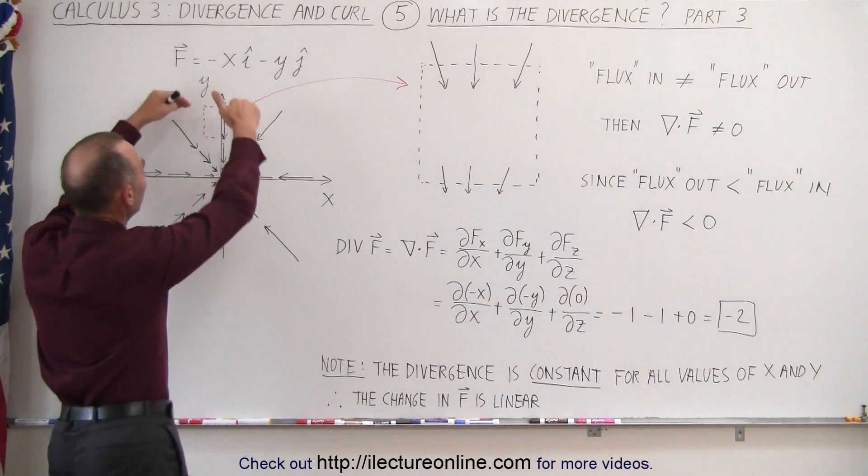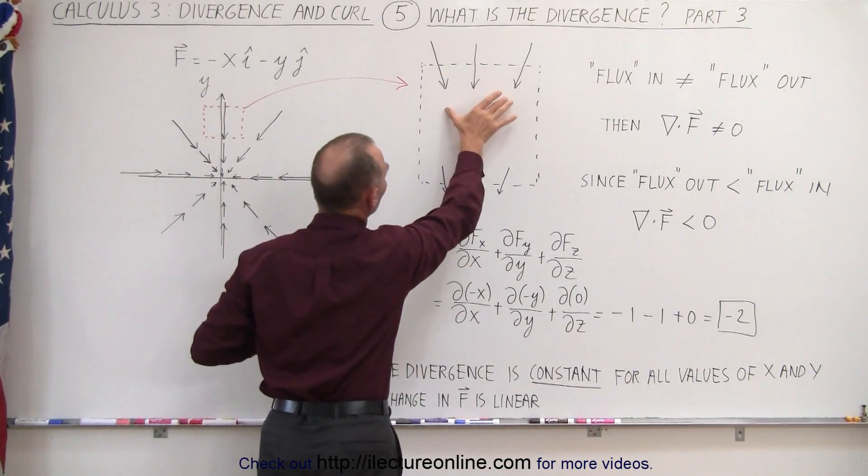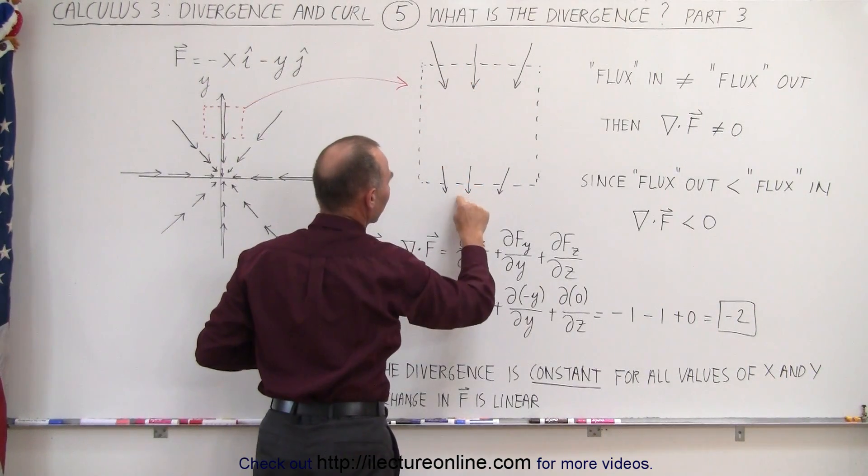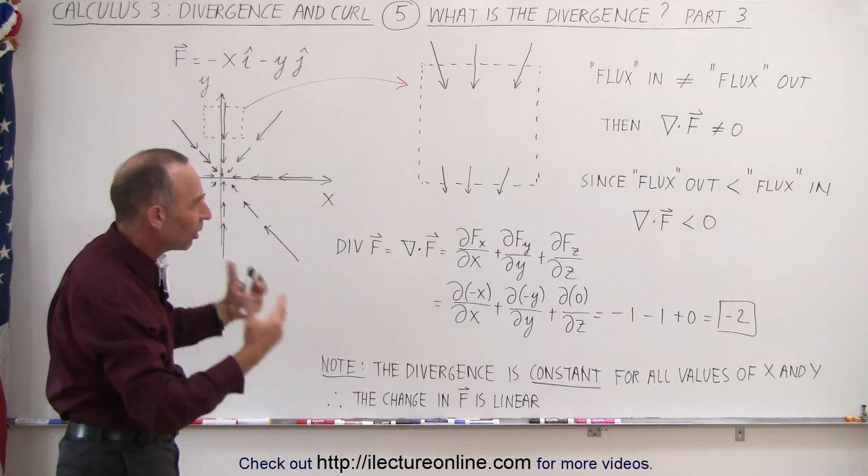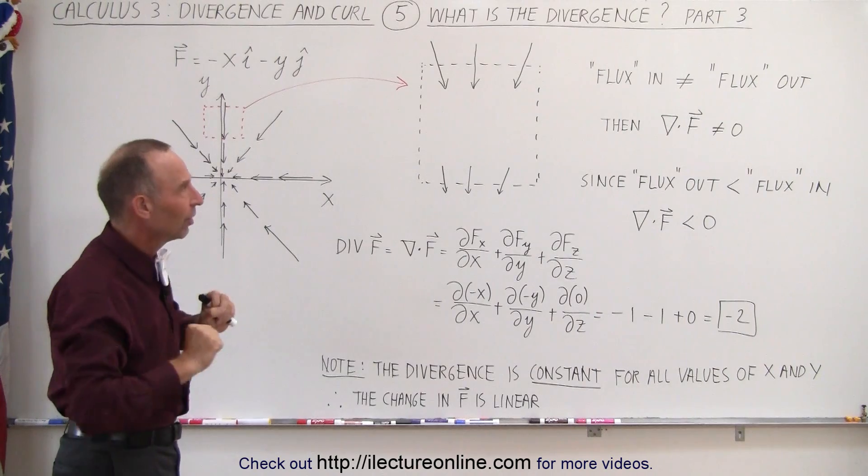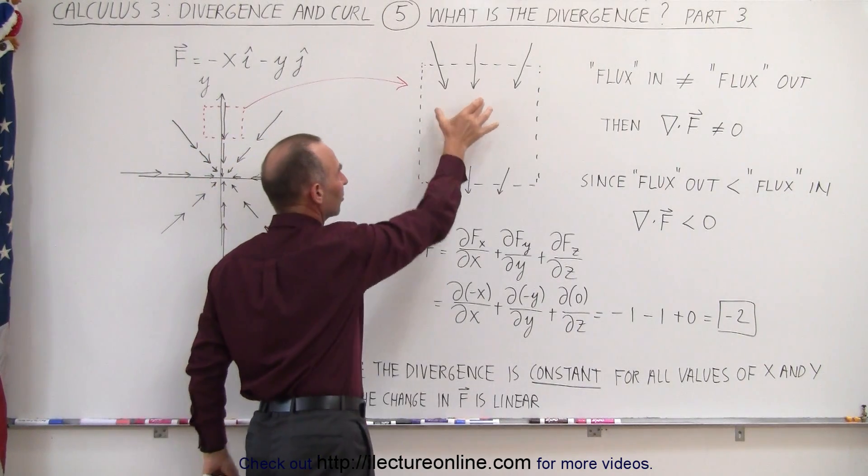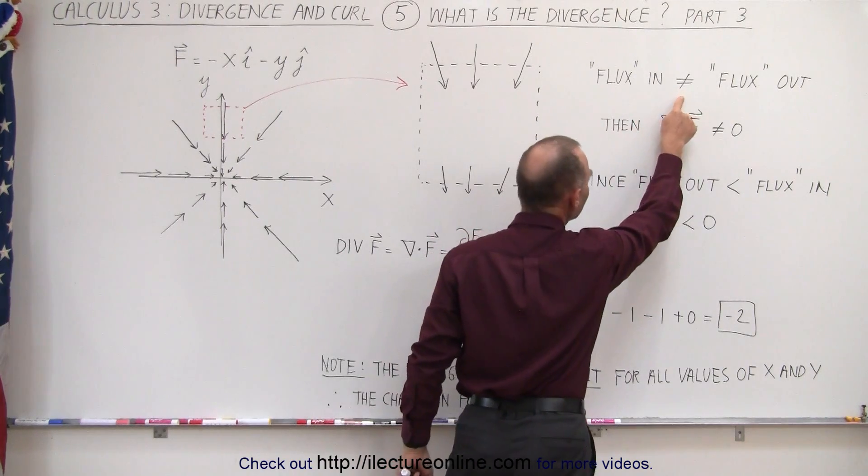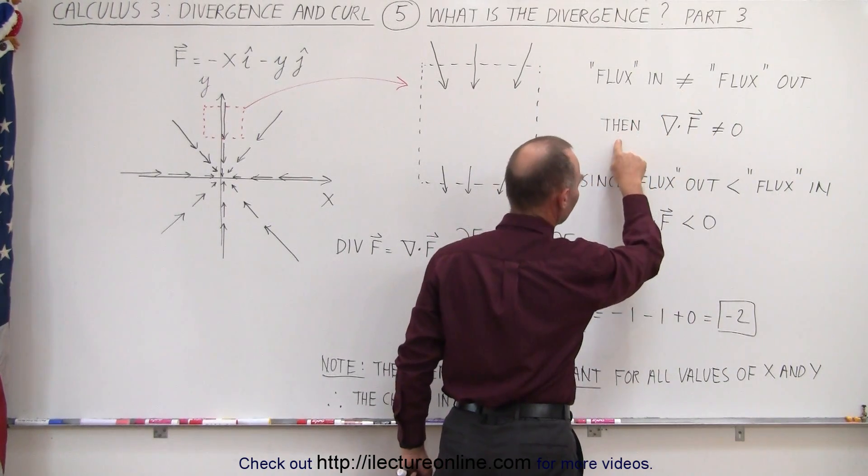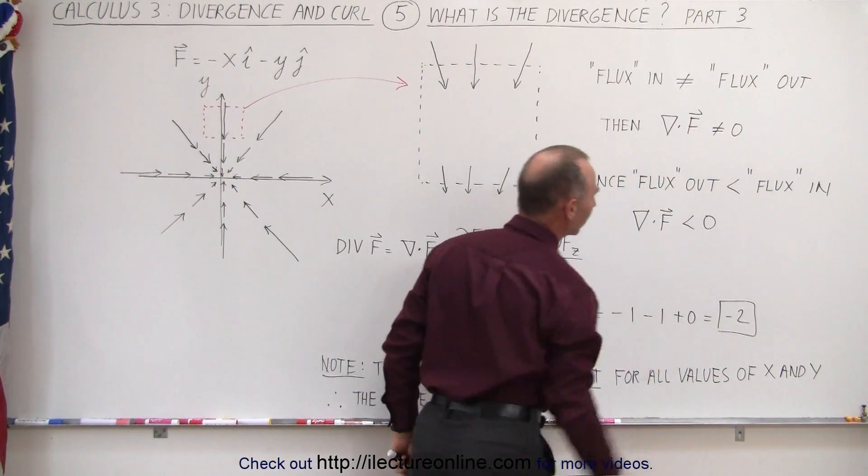You can see that going into the box at the top end, you have longer arrows than you have at the bottom end coming out. So if you think of that as flux and influx of fluid, there's more fluid going into the box than coming out. So we can say that the flux in is not equal to the flux out, and therefore the divergence will not be equal to zero.